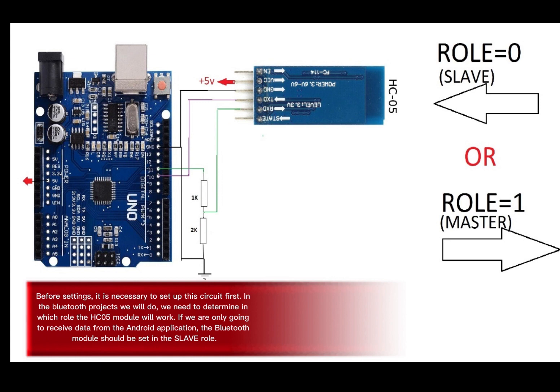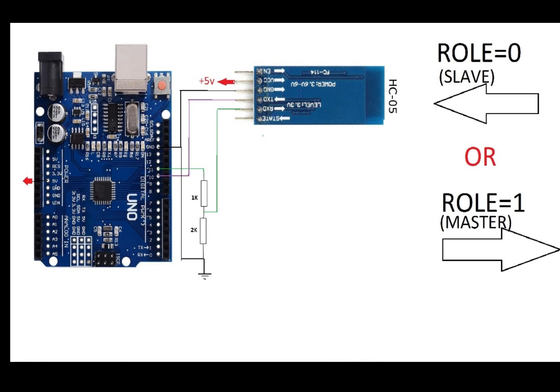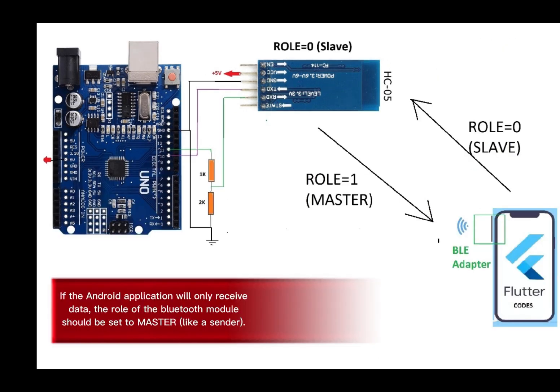If we are only going to receive data from the Android application, the Bluetooth module should be set in the slave role. If the Android application will only receive data, the role of the Bluetooth module should be set to master, like a sender.